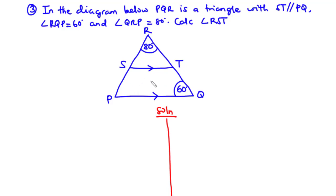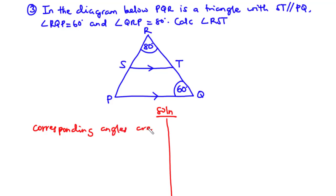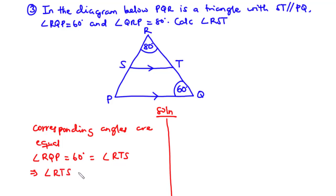From the angle properties of parallel lines in the triangle, angle RQP corresponds with angle RTS. Since corresponding angles are equal, angle RTS equals 60 degrees.